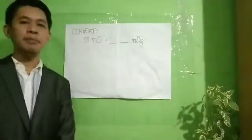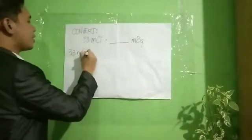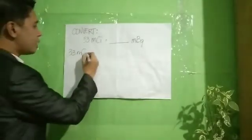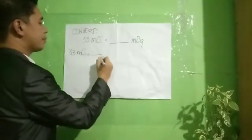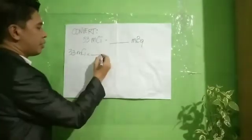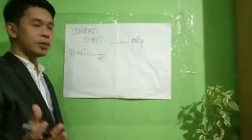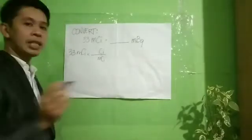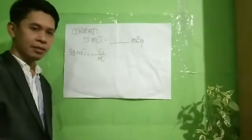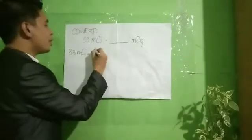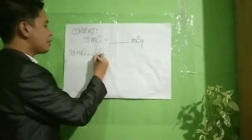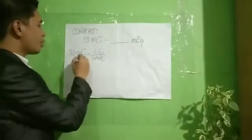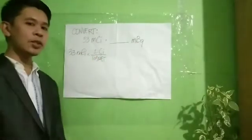Convert 33 millicurie to millibecquerel. 33 millicurie. Copy millicurie as denominator. Convert to the root unit, which is curie. For every one curie, there are 1,000 millicurie. So, cancel millicurie.